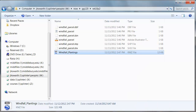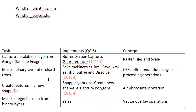We're going to be starting with this KMZ and we're going to be doing these four tasks, which I'll take you through in the videos. The first task is to capture a scalable image from Google Satellite Image, and this will be done in QGIS. You'll be using a couple of tools here. The main concepts are raster tiles — which is how Google's satellite image comes delivered — and their scalability. I'm not going to have a separate video for this just yet, but I'll talk about these concepts in this video.